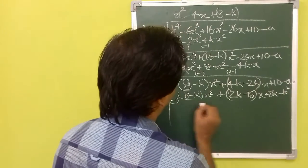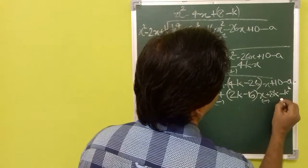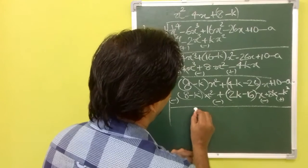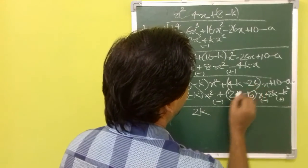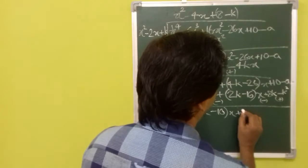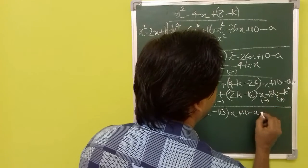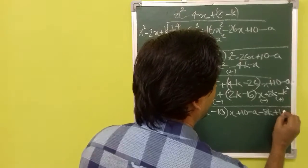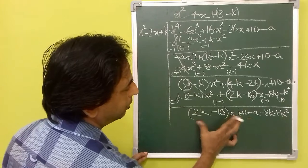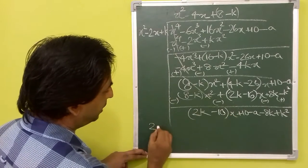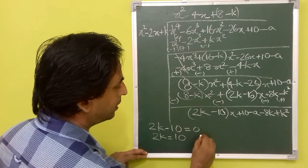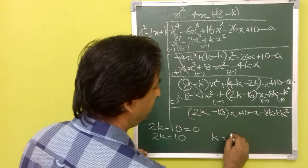Now, you can change the signs of everything and add. So, this will be 0. 4k minus 2k is 2k. Minus 26 plus 16 will be minus 10 into x. We know that the remainder has to be 0, so it can be 0 either when this part is 0 or this part is 0. When this part is 0, you can get 2k minus 10 is equal to 0. That means 2k is equal to 10 and k is equal to 10 by 2, that will be 5.